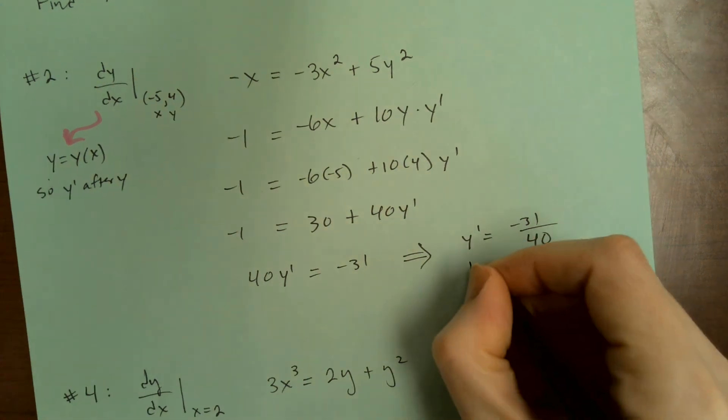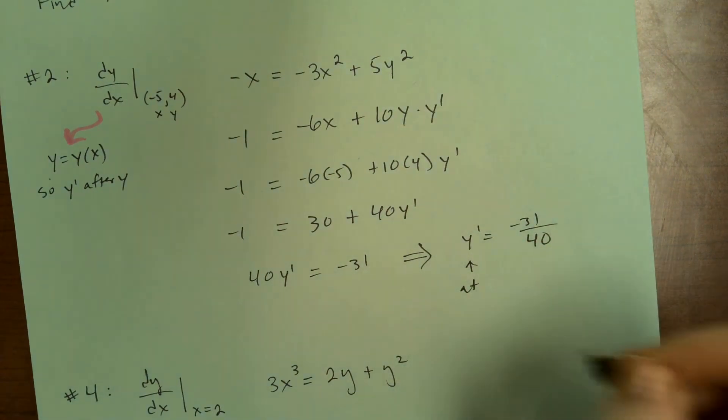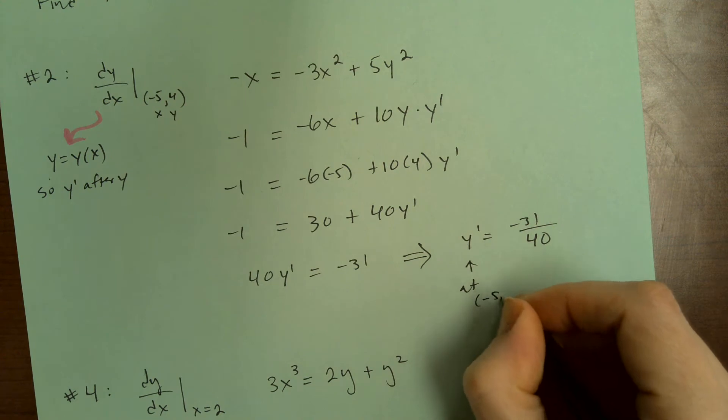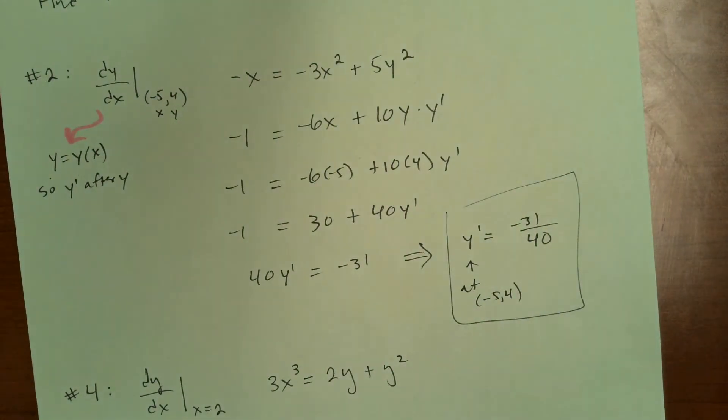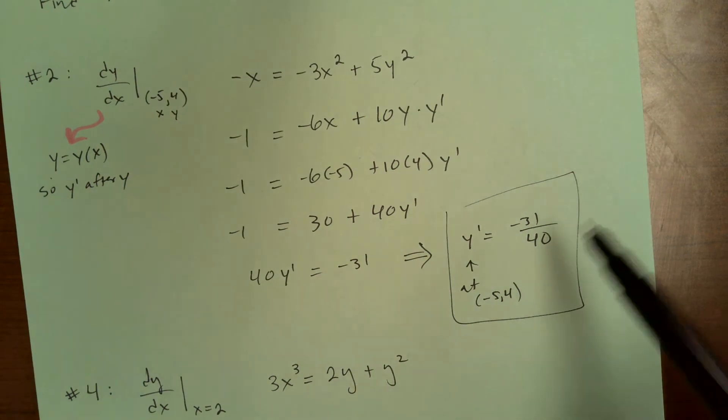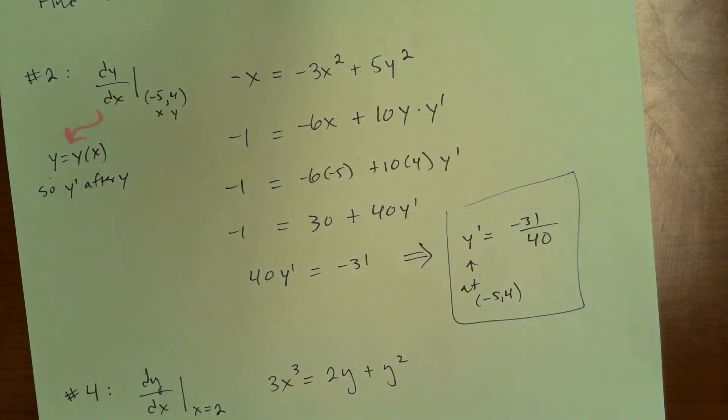So this gives us y prime at negative five, four. And that's a pretty steep. Is it steep? No, it's less than one. That slope is less than one. So I guess it's not super steep.